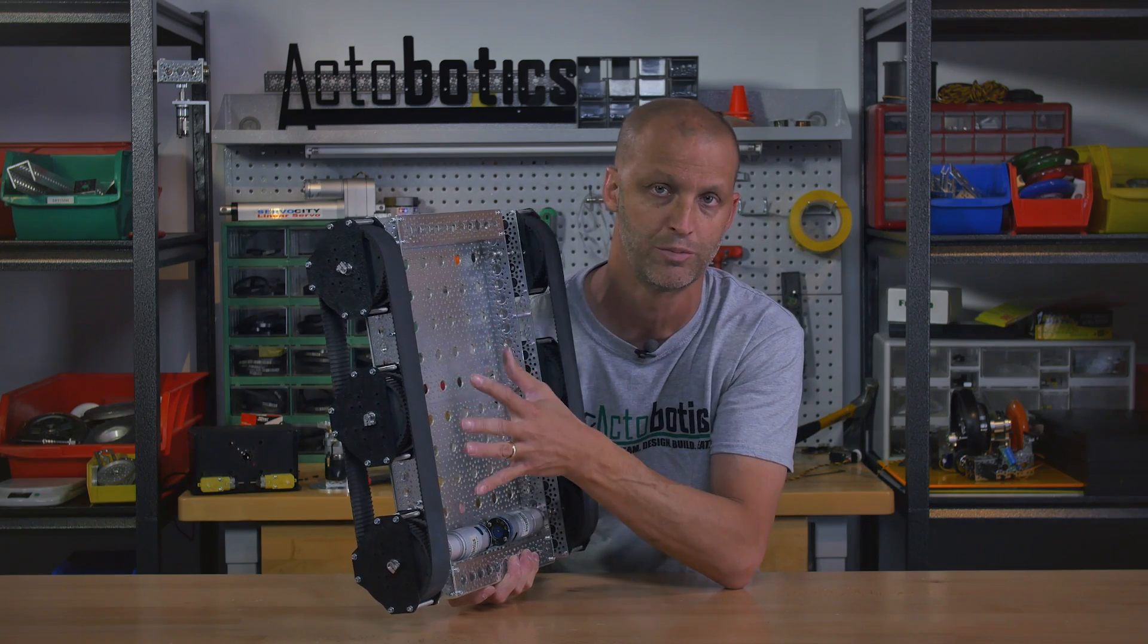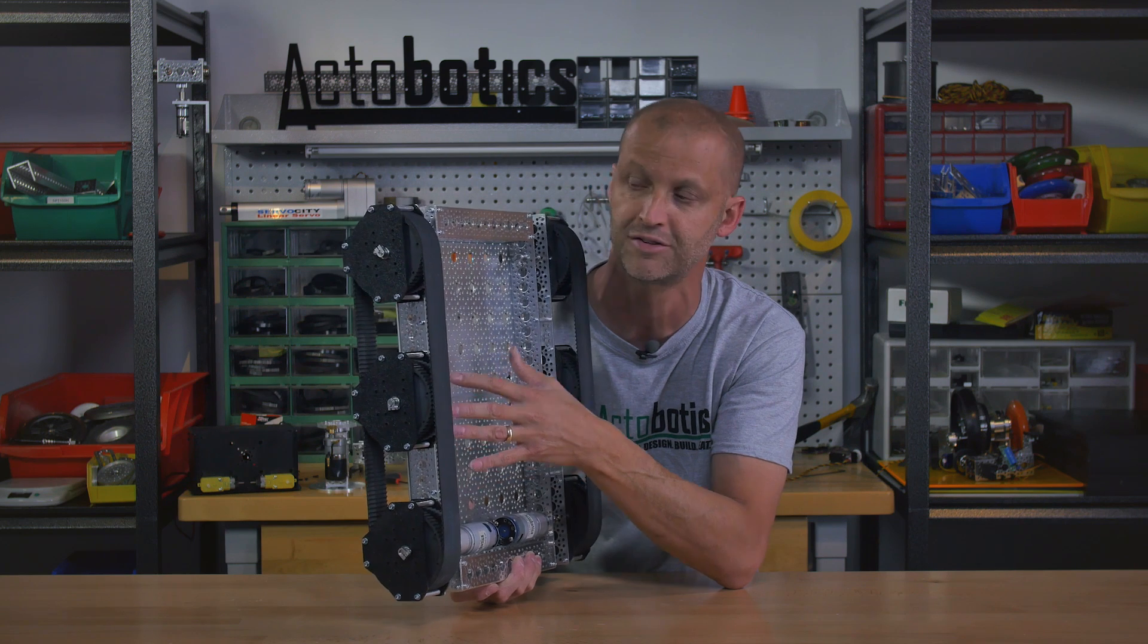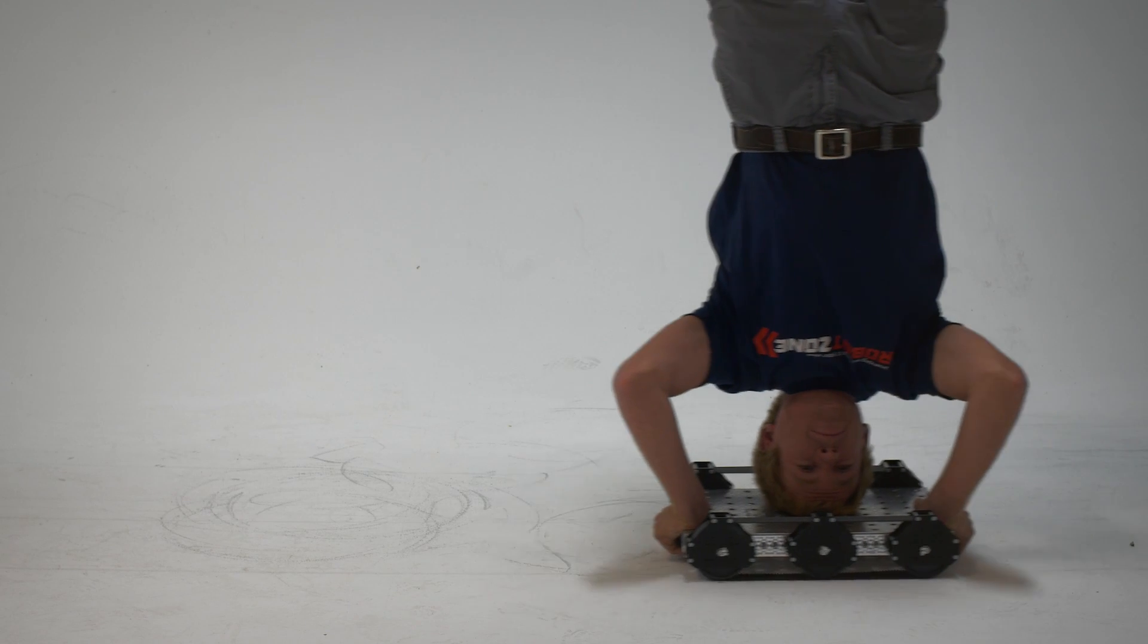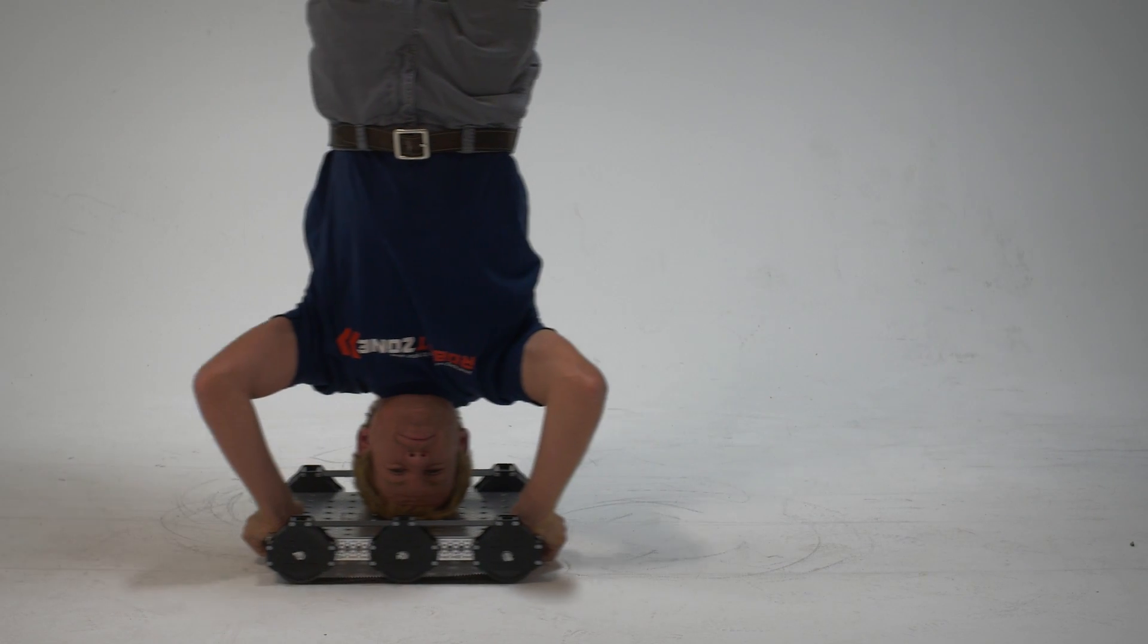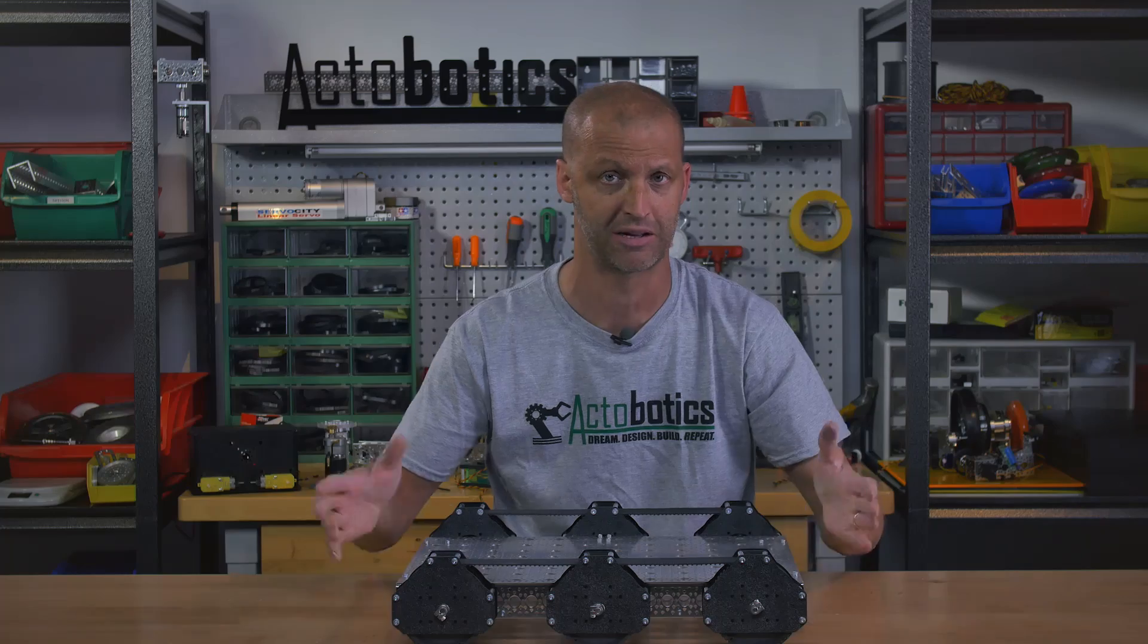All the shafts run through ball bearings. You've got quarter inch shafts. We have gotten on this robot kit and ridden it around ourselves, so it can take a tremendous amount of weight. Right now the robot is exactly 18 inches long by about 16 inches wide.